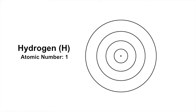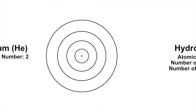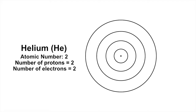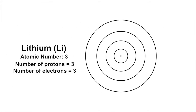Hydrogen has atomic number one, which means it has one proton. So a neutral hydrogen atom has one electron, which goes in the first shell. Next comes helium, with two electrons, which fill the first shell. Lithium has three electrons. The first shell can hold a maximum of two electrons, so the third electron gets put in the second shell.